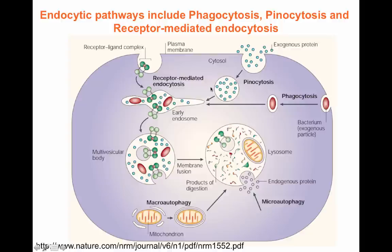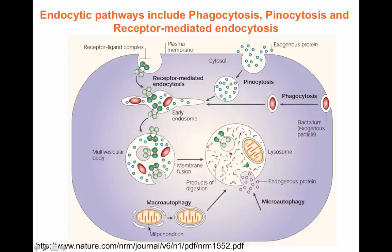Receptor-mediated endocytosis involves a ligand binding a receptor on the cell surface, which triggers formation of a vesicle bringing in the cargo bound by that ligand. That vesicle fuses with an early endosome, which eventually fuses with the lysosome, where the contents are degraded. Lastly, macroautophagy involves generating a membrane around a damaged organelle — for example, a non-functional mitochondria — engulfing it, and eventually fusing it with the lysosome to destroy it.